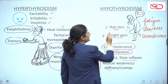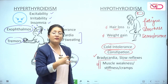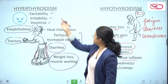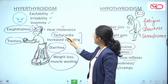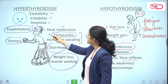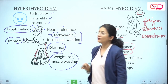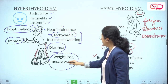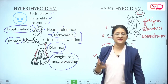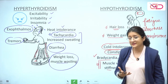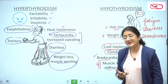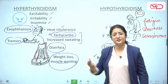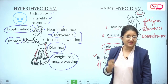In long-standing, untreated hyperthyroidism, while initially there is tachycardia, with uncontrolled excess thyroid hormones there is eventually muscle wasting. This muscle wasting will also involve the cardiac muscles, so cardiac myopathy sets in. Eventually these patients with hyperthyroidism are at future risk of cardiac decompensation as well.